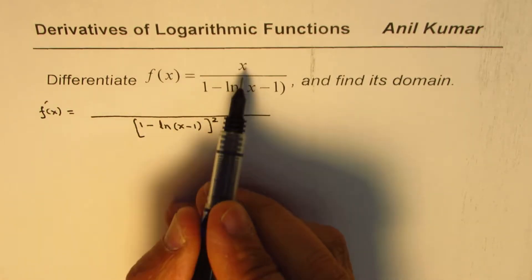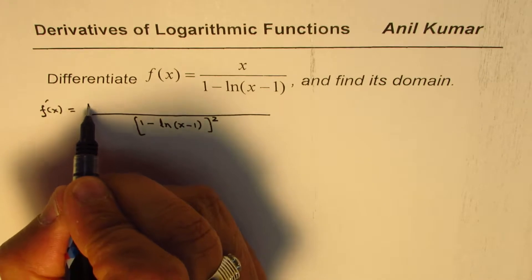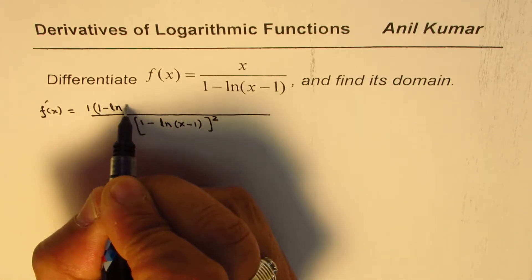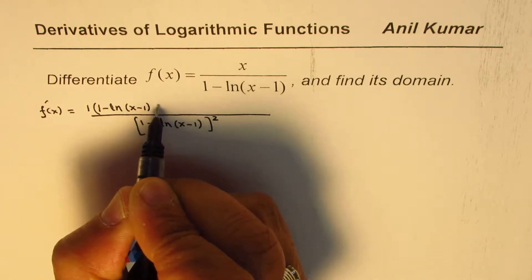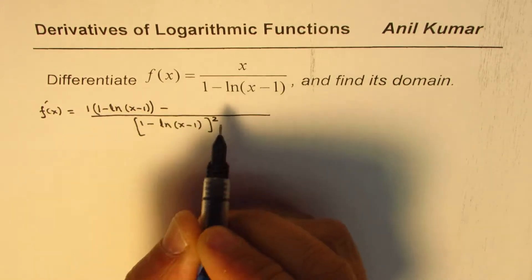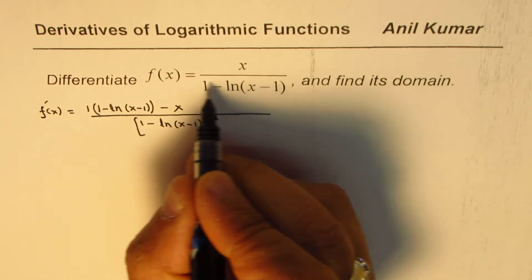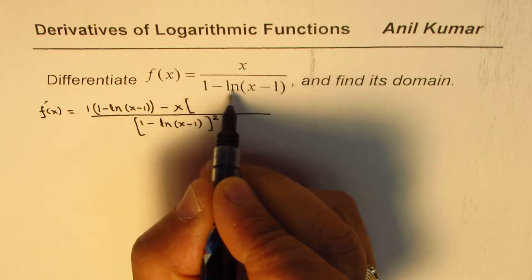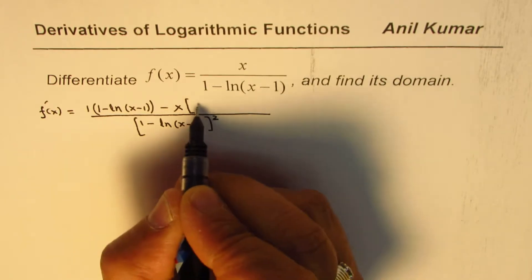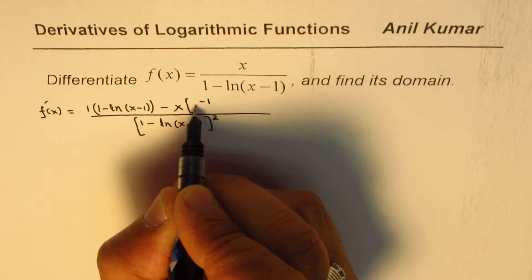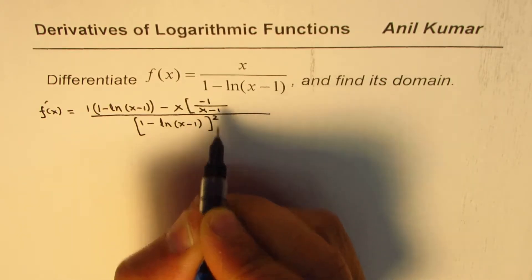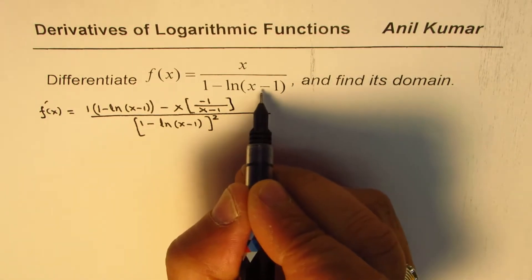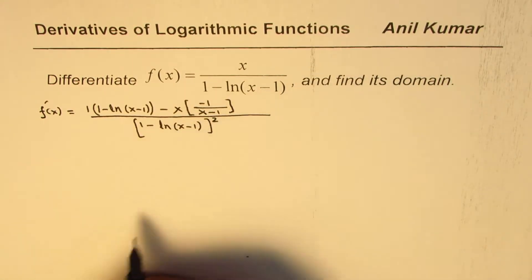In the numerator, we'll have the derivative of x times this function, which is 1, so 1 times (1 minus ln(x minus 1)), minus x times the derivative of this function. The derivative of 1 is 0, and here we have minus, so we have minus 1 over (x minus 1), times the derivative of the inside function, which is 1.